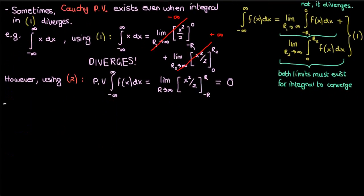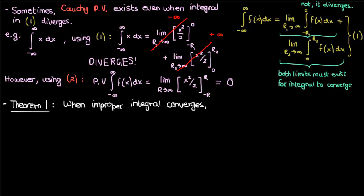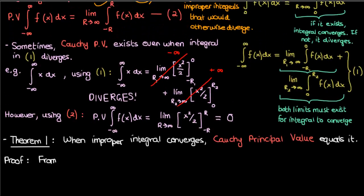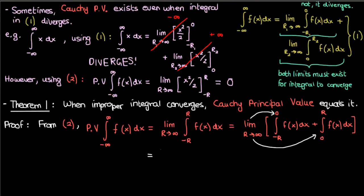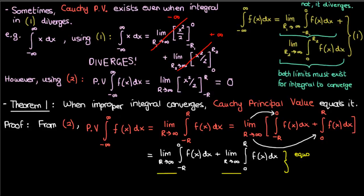An interesting fact about the Cauchy principal value is that when the improper integral does exist, the Cauchy principal value equals that improper integral. We can prove this very easily starting with equation two. If we split up the integral on the right into two parts, and then distribute the limit over the integrals, we end up with an expression that equals the improper integral in equation one, as long as those two limits exist.